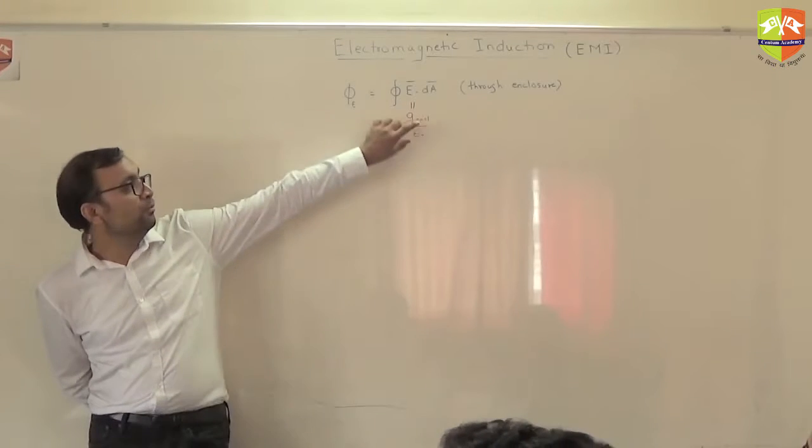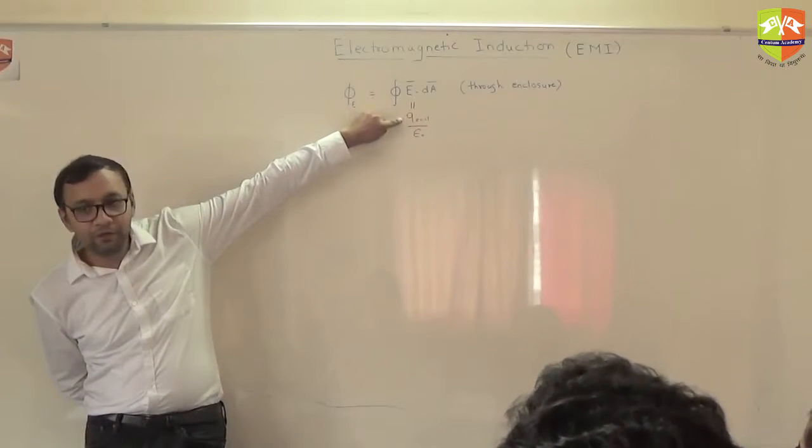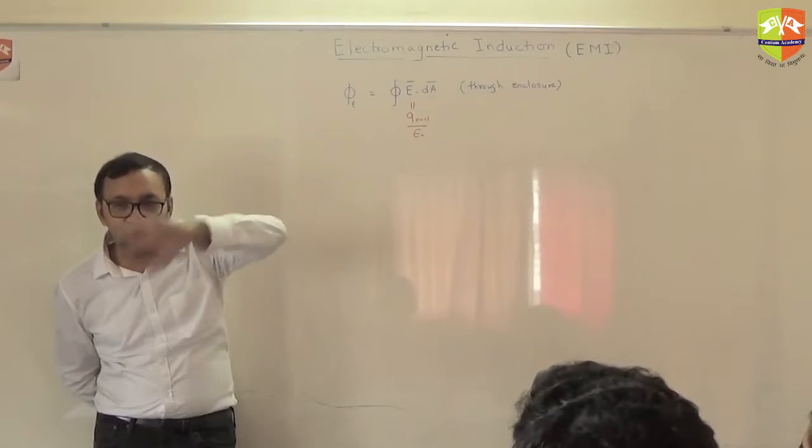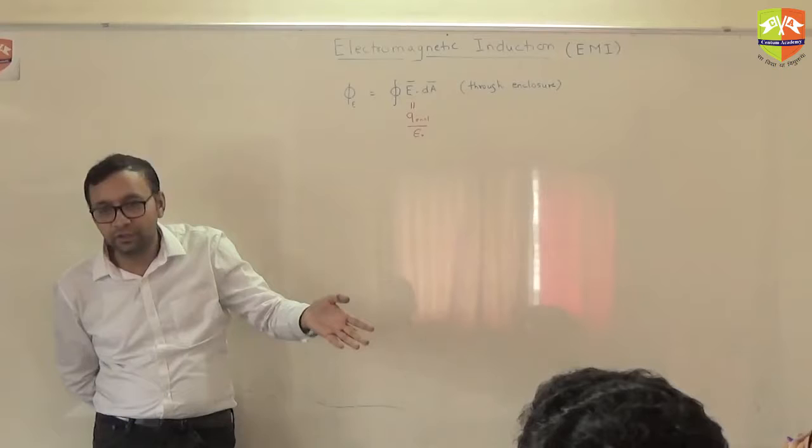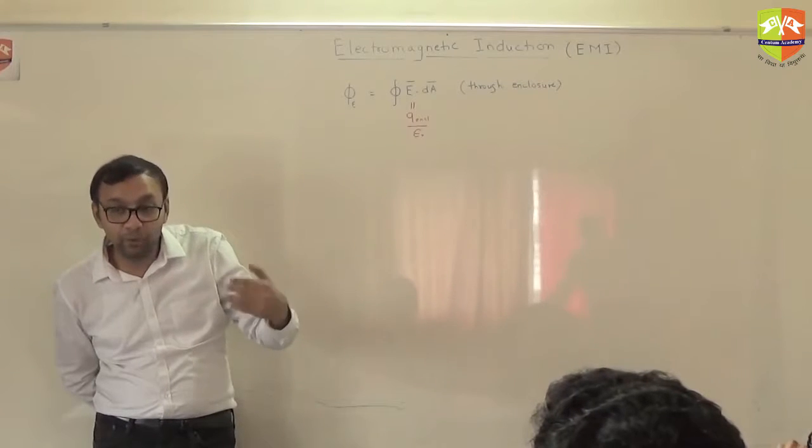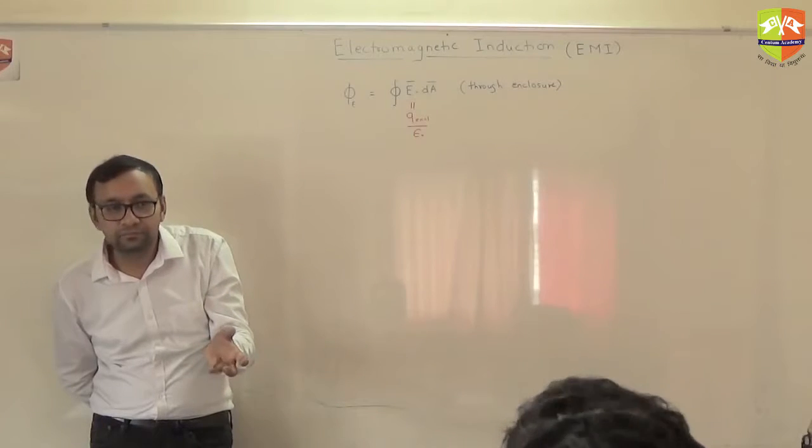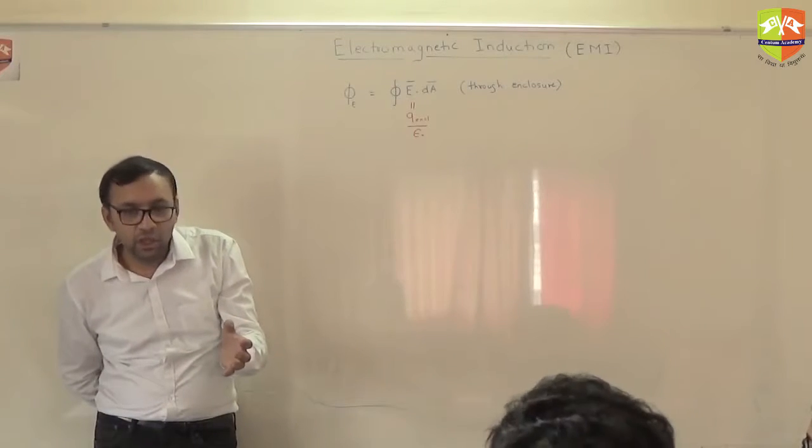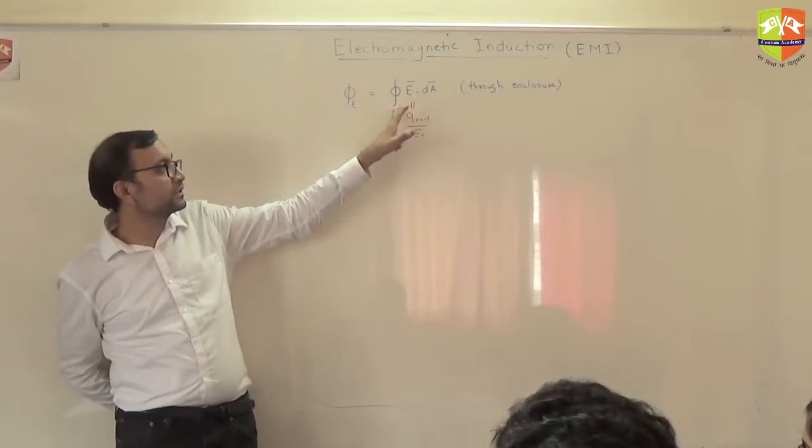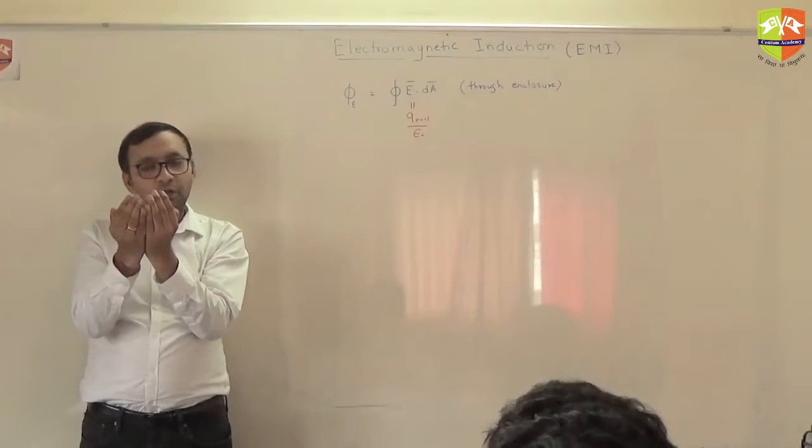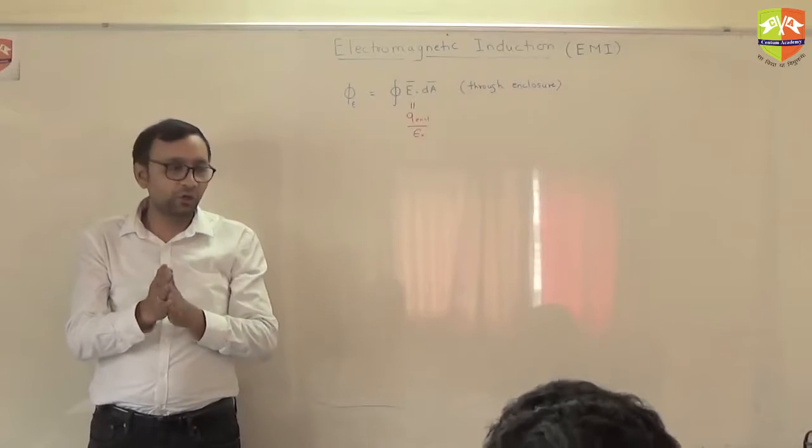Because there is no monopole exists, counterpart of charge is not there. Every time you enclose a magnet, north and south pole both get enclosed. It is like enclosing dipole, electric dipole, in the enclosure. Total charge enclosed will be zero.